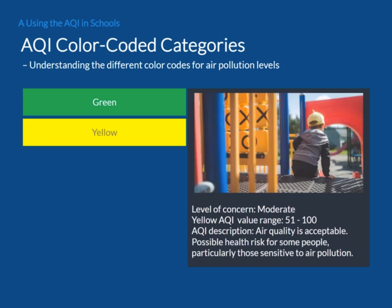Next is yellow, with AQI values ranging from 51 to 100. Air quality in the yellow level is acceptable, with moderate health concern. However, there may be a health risk for some people, particularly those who are sensitive to air pollution, including children, older adults, people with lung disease or asthma, and those who are always active outdoors.